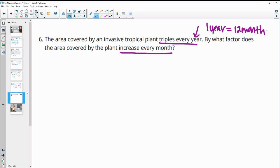And so we want 1 twelfth of that because we only want 1 month. So it's going to triple every year. So then it's going to be 3 to the 1 twelfth every month.